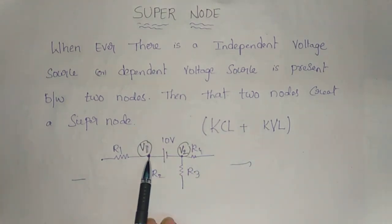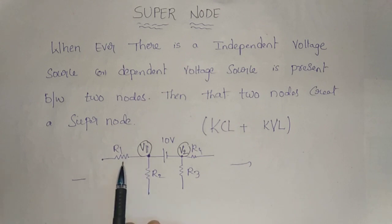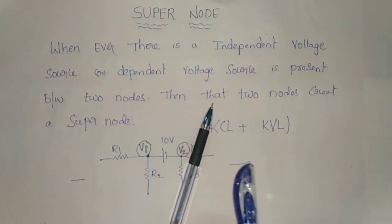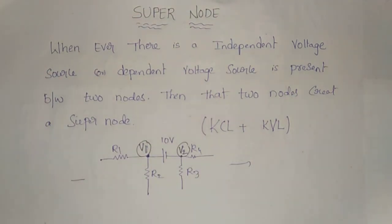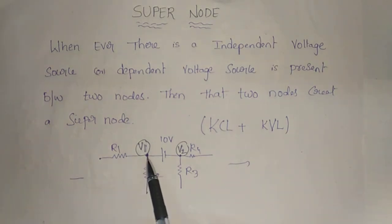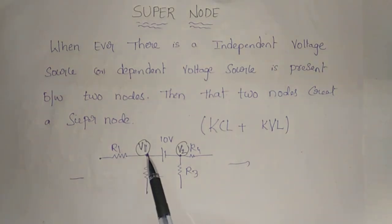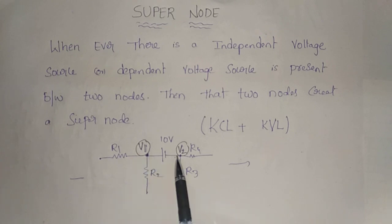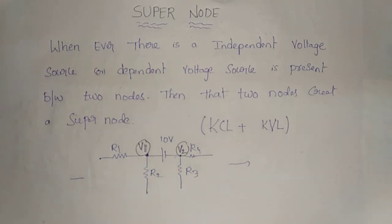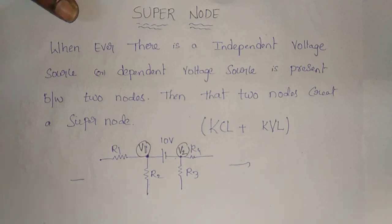This is IS2 voltage. This is the current flow. So here we have the current. This is V1 by R1 plus V2 by R2 plus something else. V1 and V2 come from the resistor.